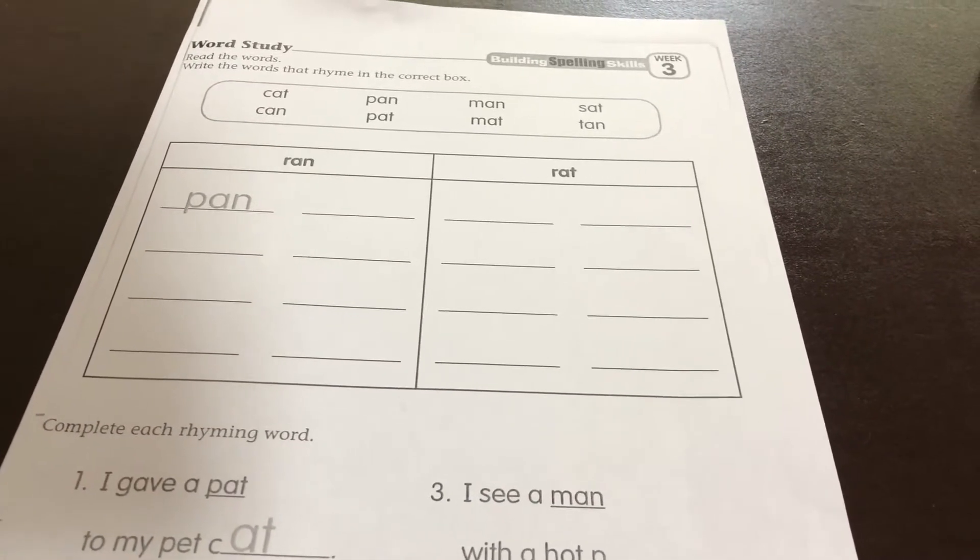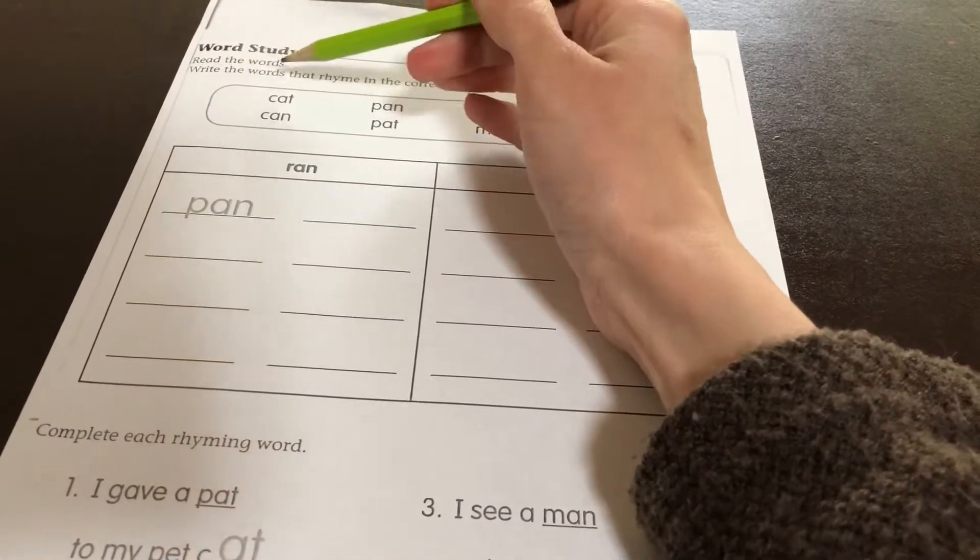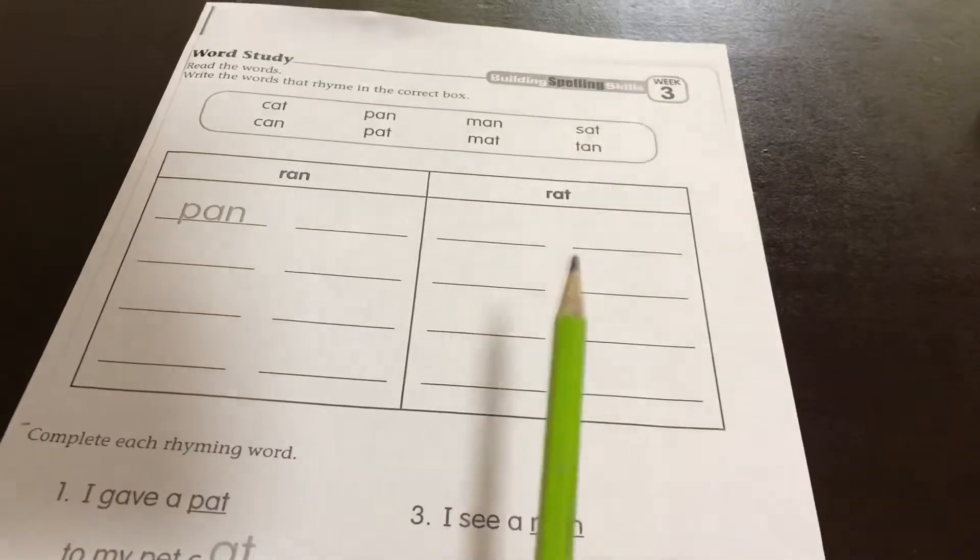Building Spelling Skills Grade 1, Week 3. Word study. Read the words. Write the words that rhyme in the correct box.